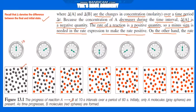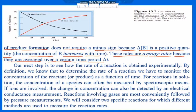The time intervals shown are 0, 10, 20, 30, 40, 50, and 60 seconds. Our next step is to see how the rate of reaction is obtained experimentally. In diagram 13.2, the graphical representation shows the rate of reaction A→B as the decrease of A molecules with time. Graph A shows A decreasing and graph B shows B molecules increasing with time, confirming the definition of rate.